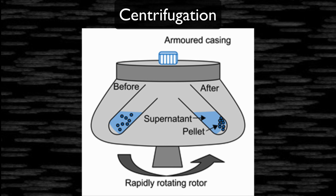At different RPM — revolutions per minute — different organelles settle to the bottom, because every organelle has a different weight. The speed of spinning determines which organelle goes down at which point. The separated samples are then taken to the lab and tested to find out what each different organelle is performing. This is how scientists discovered that mitochondria produce ATP.